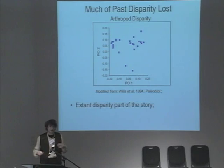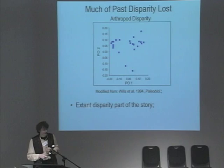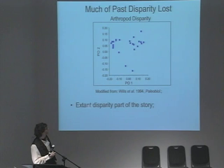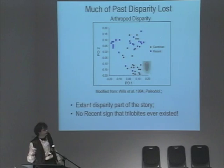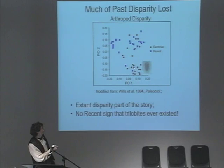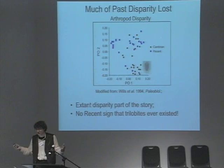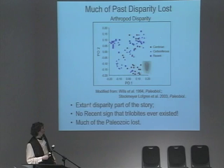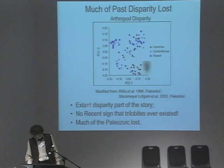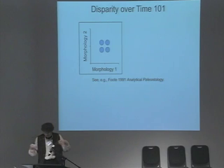One reason so many of us become paleontologists is because much of past disparity is lost. Based on a study from Matt Wills and Derek Briggs showing a principal coordinates analysis of arthropods, you have a lot of disparity — but when you add the Cambrian, whole chunks of morphospace have been pretty much eliminated, because we have no way of inferring from the modern fauna that trilobites ever existed. Going through time, even in the Carboniferous most of the Cambrian morphospace is lost, and Carboniferous morphospace is also lost. This historical context is quite important for looking at disparity and its evolutionary implications.